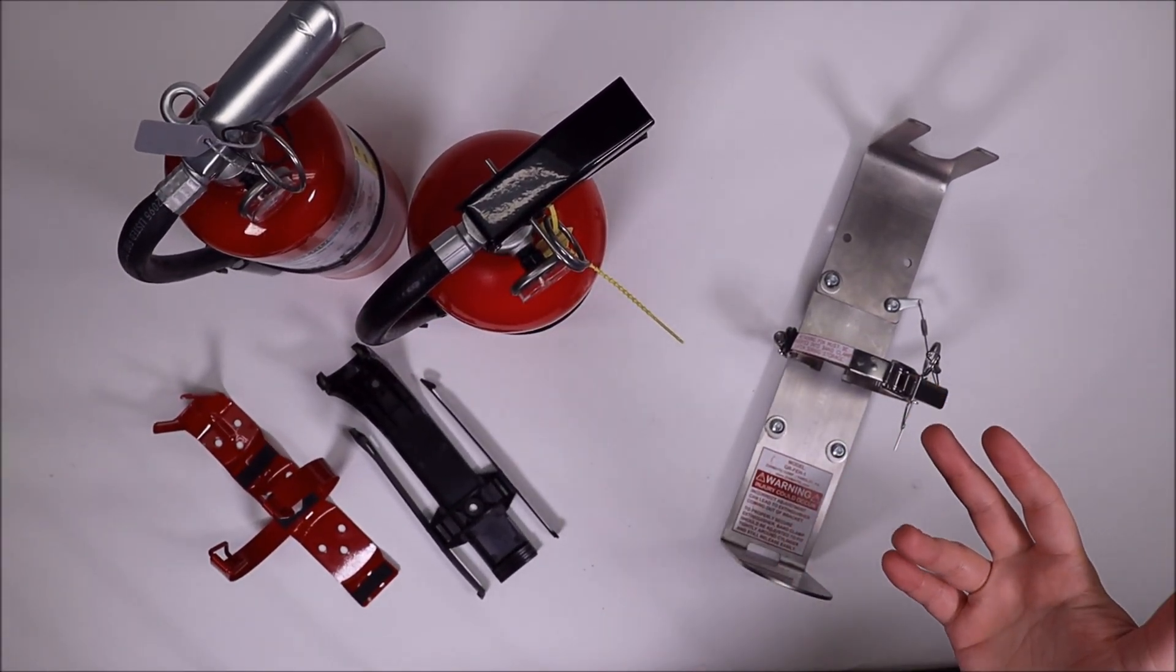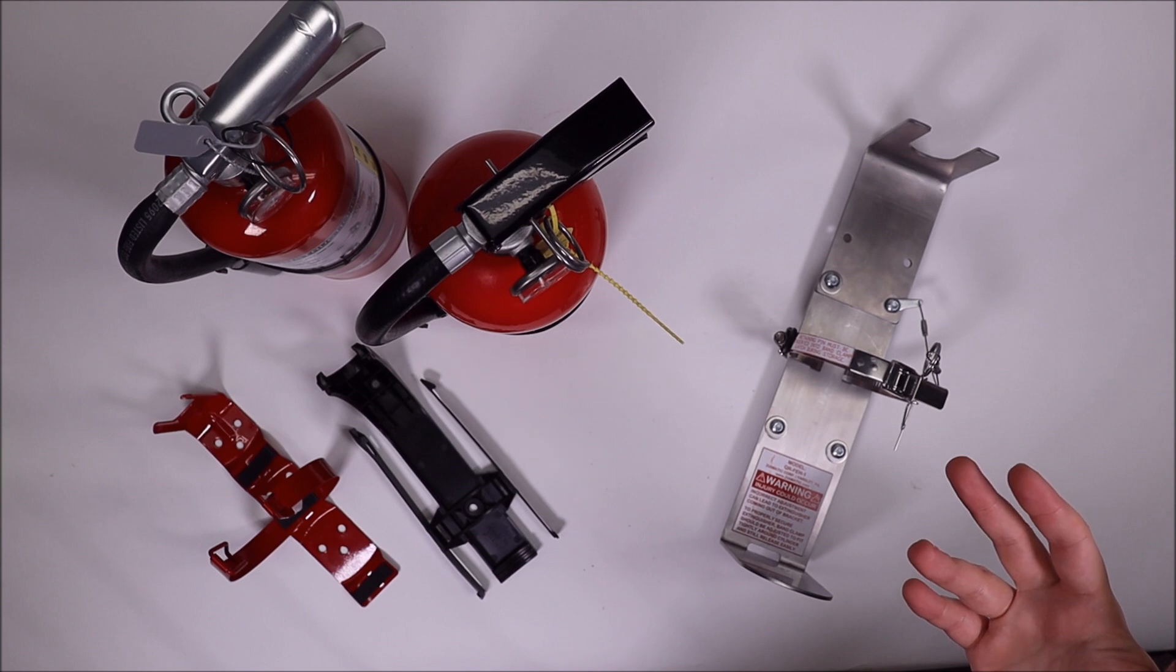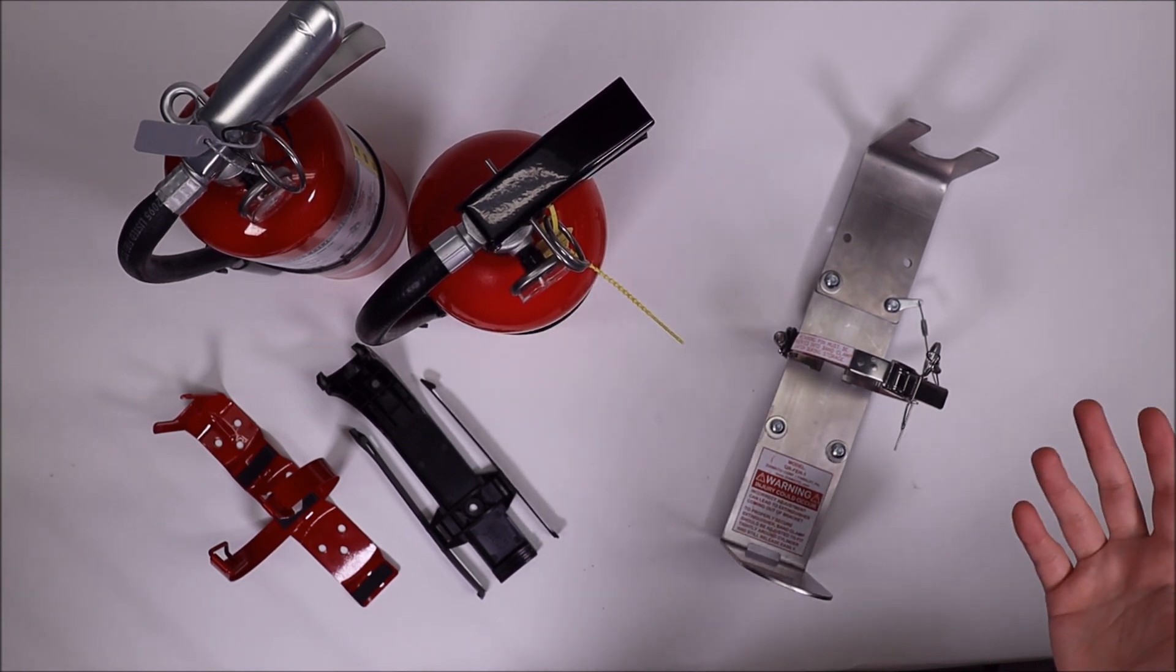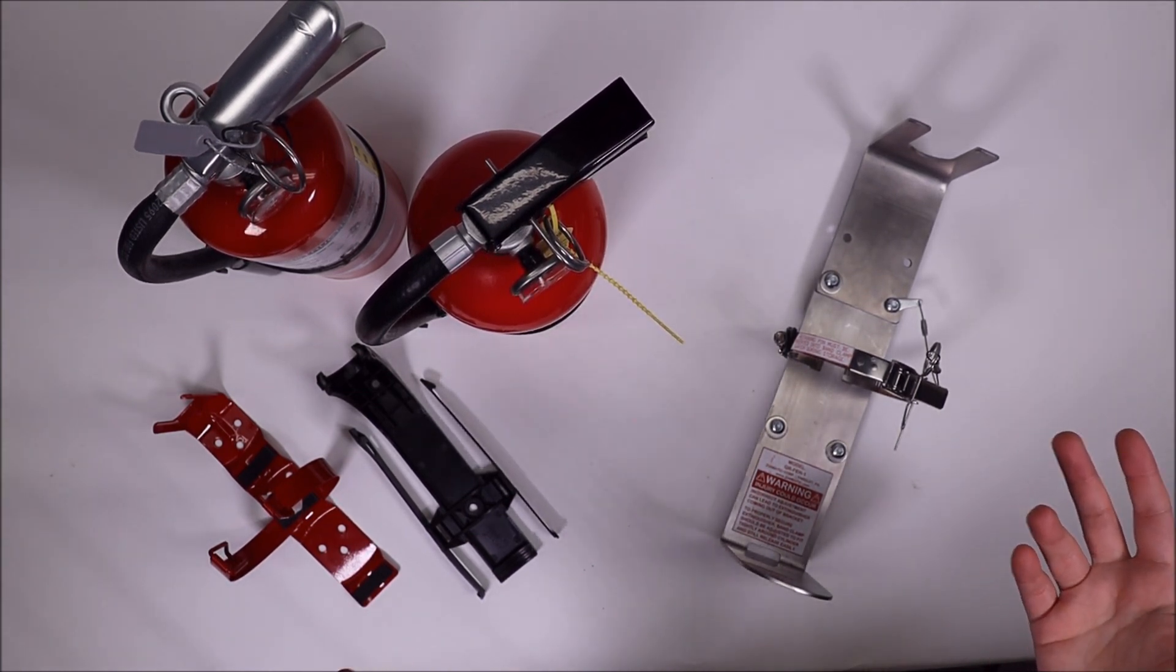So how do you store fire extinguishers in the crew area of your ambulance or your fire apparatus? Do you strap it down somewhere? Do you toss it loose in a cabinet?